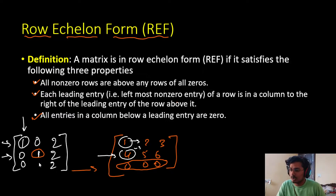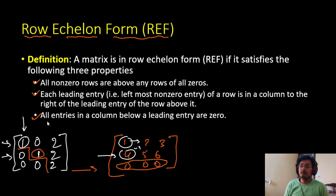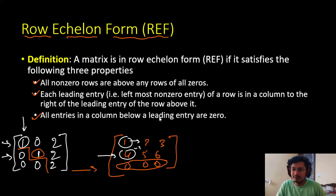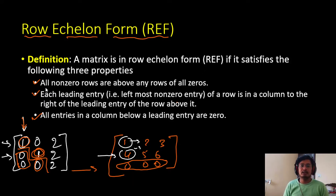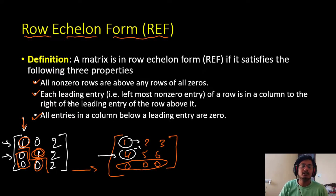If the entries are arranged correctly, we obtain a staircase pattern. The third property: all entries in a column below a leading entry are zero. So if we have a leading entry, all entries in that column below it should be zero. These are the three conditions — if any matrix satisfies all three, it is in row echelon form.